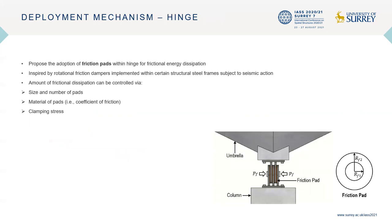In terms of the hinge, we propose the use of friction pads for energy dissipation. This design was inspired by rotational friction dampers that are adopted from certain steel seismic frames. The amount of energy dissipation can therefore be controlled by varying the size and number of the pads, the material of each pad, and of course, the total clamping stress at the hinge.